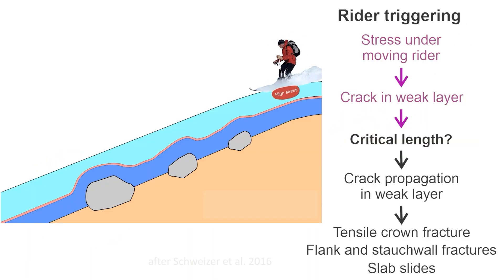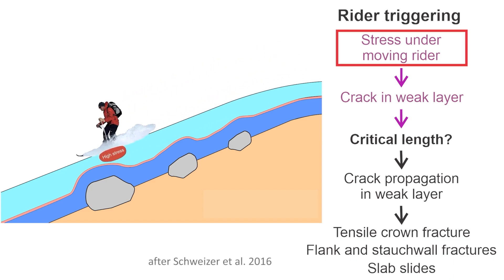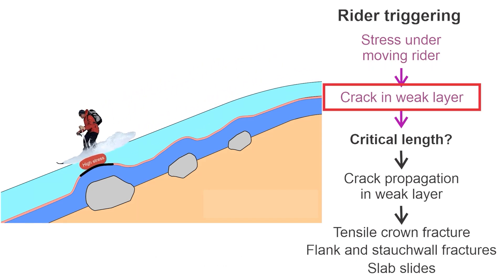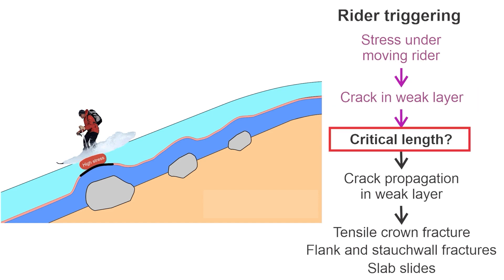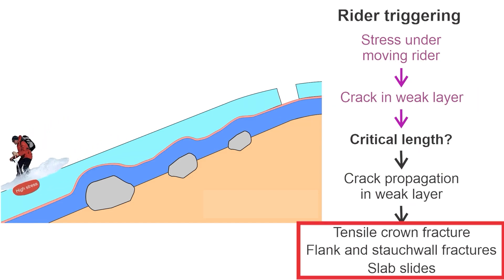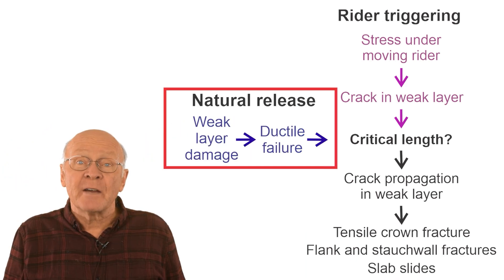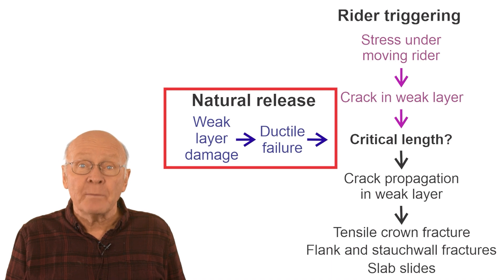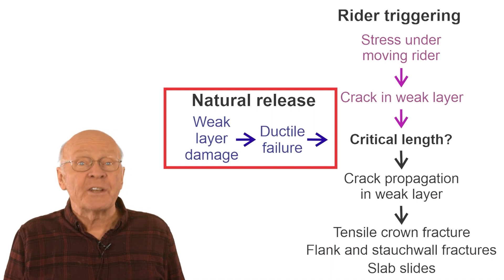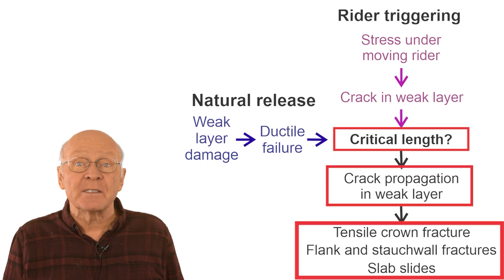Here are the stages that we'll use in this video. Stress under the moving rider cracks the weak layer. If the crack is longer than the critical crack length, the crack propagates in the weak layer. The crown and other boundaries of the slab fracture, releasing the slab. The first stages of natural avalanche release are different, but once the crack or initial failure reaches the critical length, the latter stages are the same.